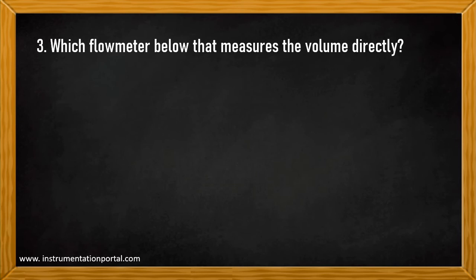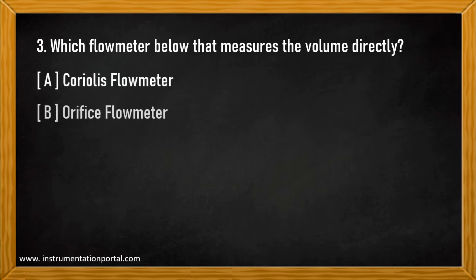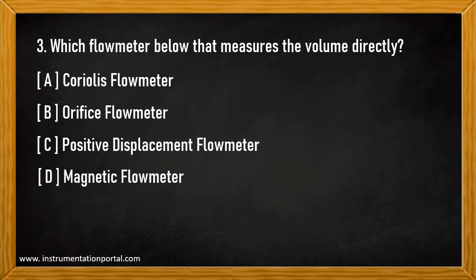Question number three: Which of the flow meters below measures the volume directly? A. Coriolis flow meter. B. Orifice flow meter. C. Positive displacement flow meter. D. Magnetic flow meter.